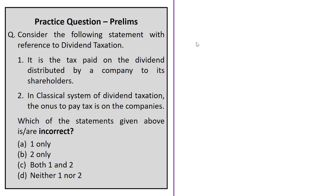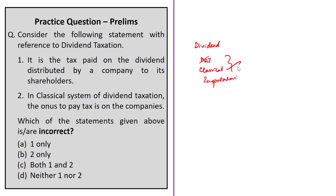To summarize this editorial: we saw what dividend means, then three methods of taxing dividend — the simplistic or DDT system, the classical system, and the imputation system. We gave more focus on the first two systems as they are more relevant from the Indian scenario. As per Union Budget 2020-21, the central government has abolished the DDT system and reverted back to the classical system. Now have a look at the practice question.